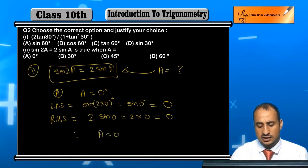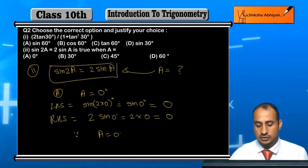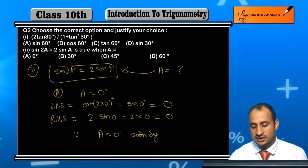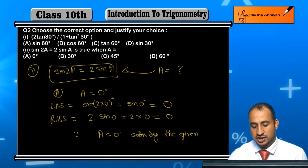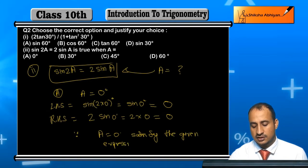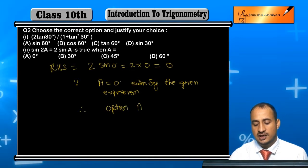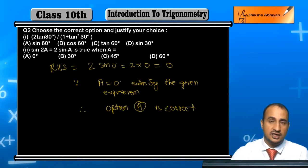Since A = 0° satisfies the given expression, therefore option A is correct. Option A is correct. For the other options this will not hold — you can verify as well.